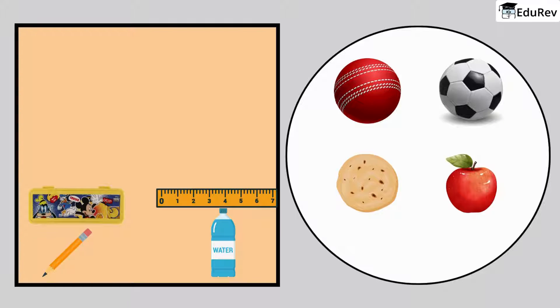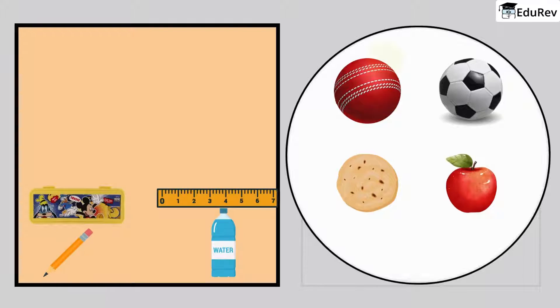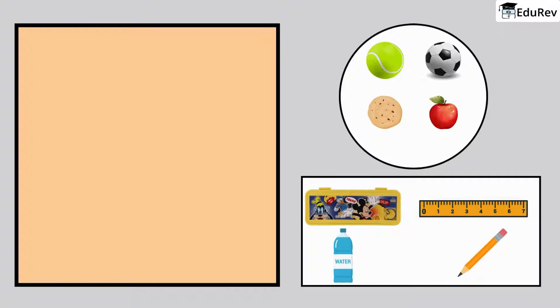Can you see any long objects here? Yes, we can draw pencil box, pencil, scale and water bottle. Great.